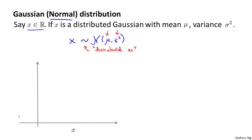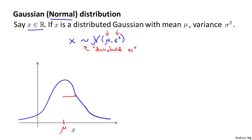If we plot the Gaussian distribution — the Gaussian probability density — it looks like the bell-shaped curve you may have seen before. This bell-shaped curve is parameterized by mu and sigma. The location or center of the bell-shaped curve is the mean mu, and the width of the curve is the parameter sigma, also called one standard deviation. This specifies the probability of x taking on different values: values in the middle have high probability, while values further away diminish in probability.